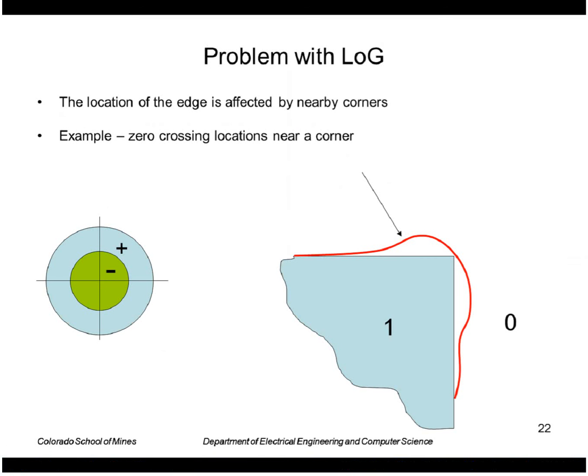One problem with the Laplacian of a Gaussian is it's not very accurate. For example, the location of the edge is affected by corners. That's because the Laplacian is adding two components — namely the second derivative with respect to x plus the second derivative with respect to y — so those two things affect each other.